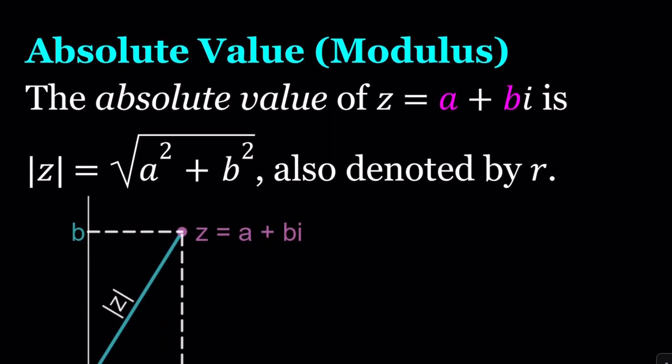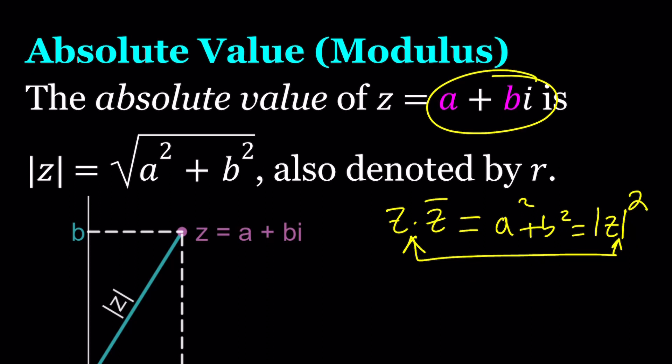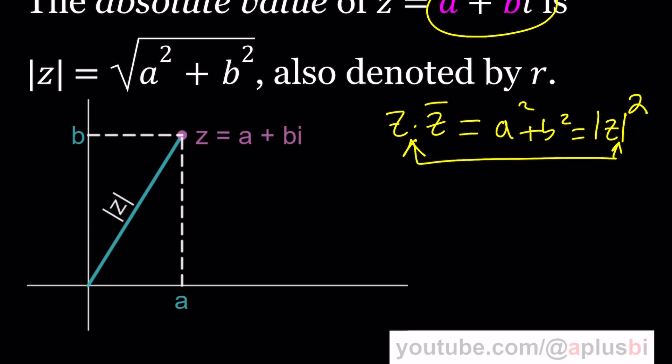The absolute value or the modulus of a complex number is very important because complex numbers cannot be compared. There is no ordering, so you can't say one complex number is bigger than another. But you can talk about their absolute value which is a real number, also denoted by r. It's defined as the square root of a squared plus b squared. Remember I told you that a squared plus b squared was going to come up. If you multiply z and z bar you get a squared plus b squared.